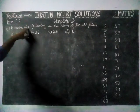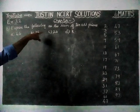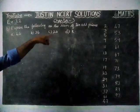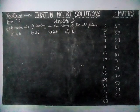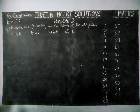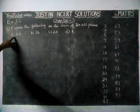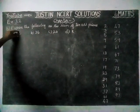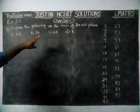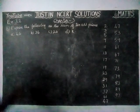Express the following as the sum of two odd primes. We have to find this value by using two odd primes.